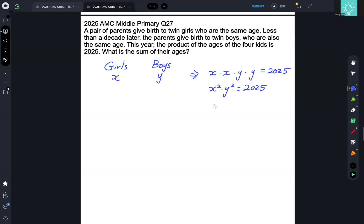We can take the square root of both sides and we would get xy equals 45. So we can take a look at the possible values of x and y.